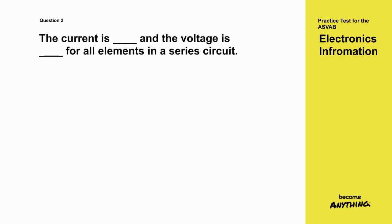Question 2. The current is what and the voltage is what for all elements in a series circuit. A equal, equal. B variable, equal. C equal, variable. D variable, variable.